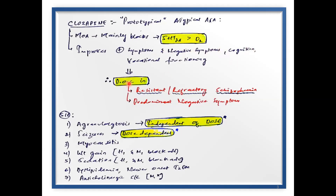Clozapine is therefore considered a reserved drug — not used in all cases of schizophrenia. Aripiprazole and other atypicals come into picture initially, and Clozapine is reserved for treatment-resistant schizophrenia. Other indications based on its pharmacodynamic properties include schizophrenia with predominant negative symptoms. Clozapine is also used in tardive dyskinesia.